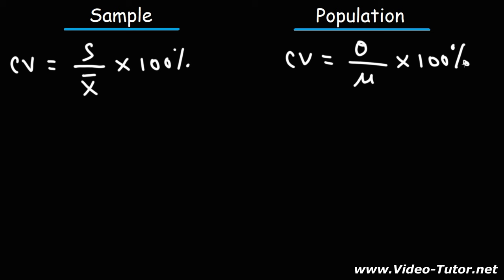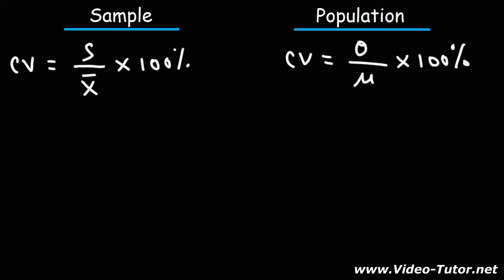One reason for that is that the units cancel out. So if the sample standard deviation has the unit feet, the sample mean will also have the unit feet, and those units will cancel out. So the coefficient of variation doesn't have any units — it's unitless — which makes it very useful when comparing one data set to another.